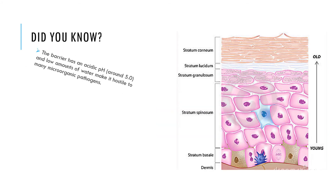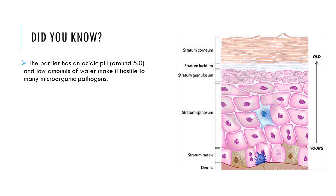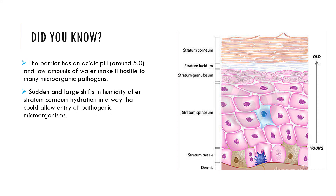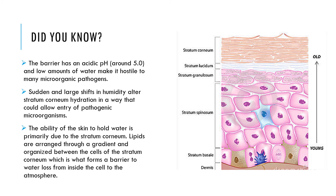Did you know that the barrier has an acidic pH around 5 and low amounts of water, which make it a hostile environment for many microorganic pathogens? Also, sudden and large shifts in humidity alter our stratum corneum hydration in a way that could allow entry of pathogenic microorganisms.